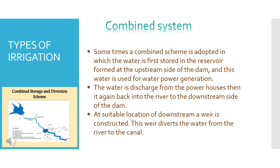In the Combined System, water is first stored in the reservoir formed at the upstream side of the dam. This stored water is used for water power generation. On the upstream side, dams are constructed for irrigation and water power generation. The dam includes diversion channels leading to a powerhouse, where electricity is generated from water. This is the combined system.